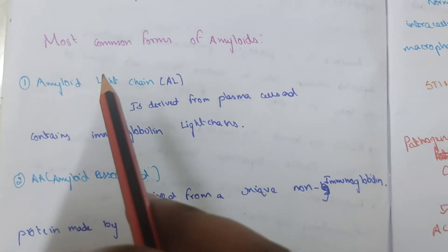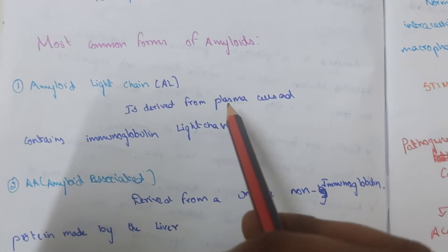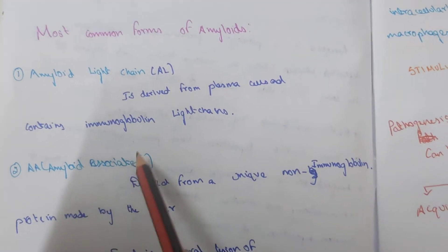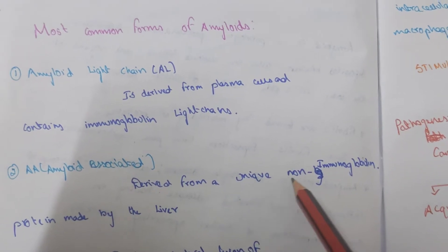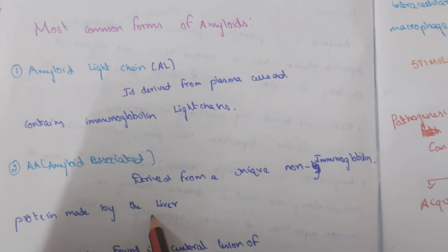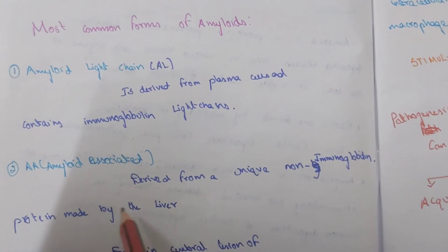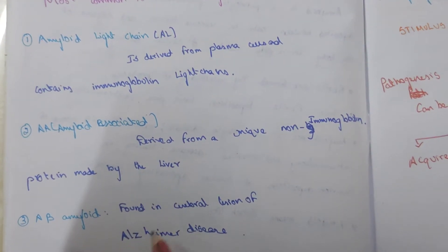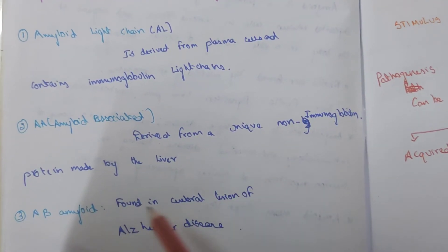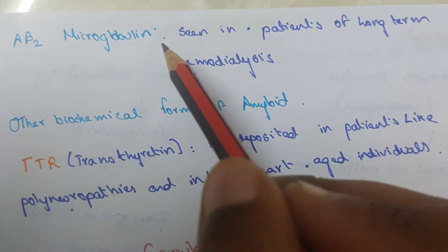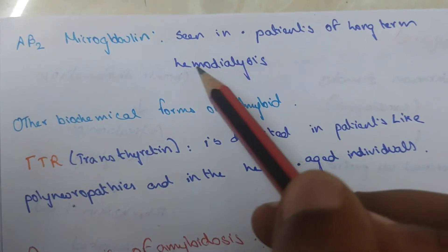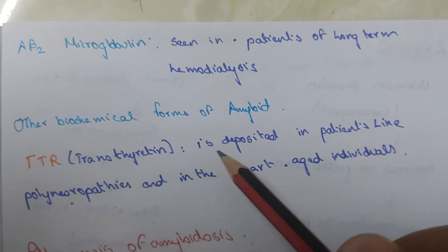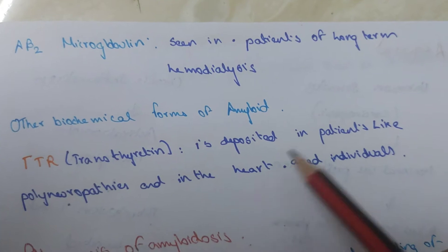The most common amyloids are: AL (amyloid light chain), derived from plasma cells and containing immunoglobulin light chain; AA (amyloid associated), derived from a unique non-immunoglobulin protein made by the liver; A-beta amyloid, found in cerebral lesions of Alzheimer's disease; beta-2 microglobulin, seen in patients on long-term hemodialysis; and transthyretin, deposited in patients with polyneuropathy, heart disease, and aged individuals.